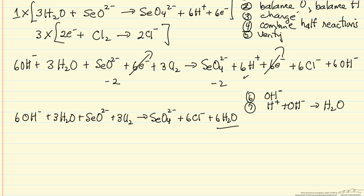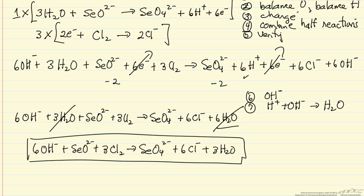Then I would cancel, subtract three waters from the left side, three from the right, so I'll end up with three waters in my final equation. So here's the final equation, basic solution. The original question asks, what's the stoichiometric coefficient for water, and the answer then would be three.